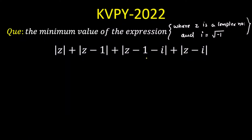Today we are going to solve a question from complex numbers. The question is: if z is a complex number, find the minimum value of the expression with four terms — mod of z, plus mod of z minus 1, plus mod of z minus 1 minus iota, and the last term is mod of z minus iota.